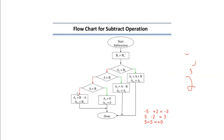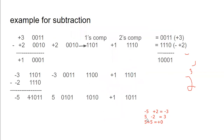If B is greater, you do B minus A, and since B is greater, you attach the sign bit of B for the result. And that completes the flowchart.